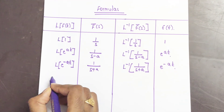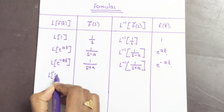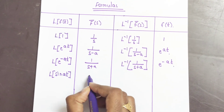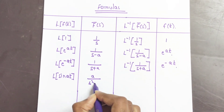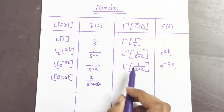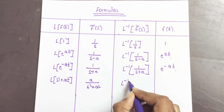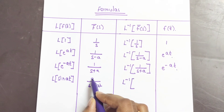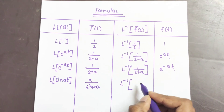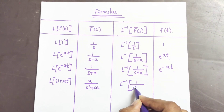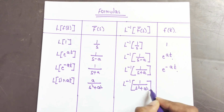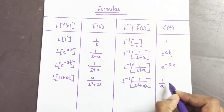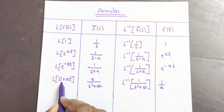Coming to the next formula — Laplace of sin(at). We know the formula of Laplace of sin(at) is a/(s² + a²). Here we apply inverse Laplace to the function 1/(s² + a²), taking the constant a aside. When we do so, it becomes 1/a, so the answer is (1/a) · f(t), where f(t) = sin(at).